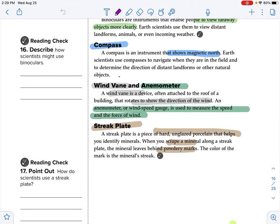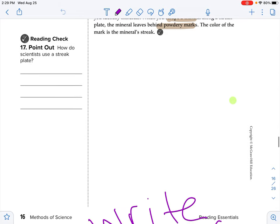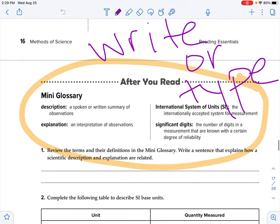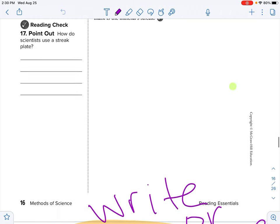A streak plate. A streak plate is a piece of hard, unglazed porcelain that helps you identify minerals. When you scrape a mineral along a streak plate, the mineral leaves behind powdery marks. The color of the mark is the mineral's streak. Alrighty. So there are the four words that you are going to need to add to your vocab assignment. Description, explanation, SI, and significant digits.